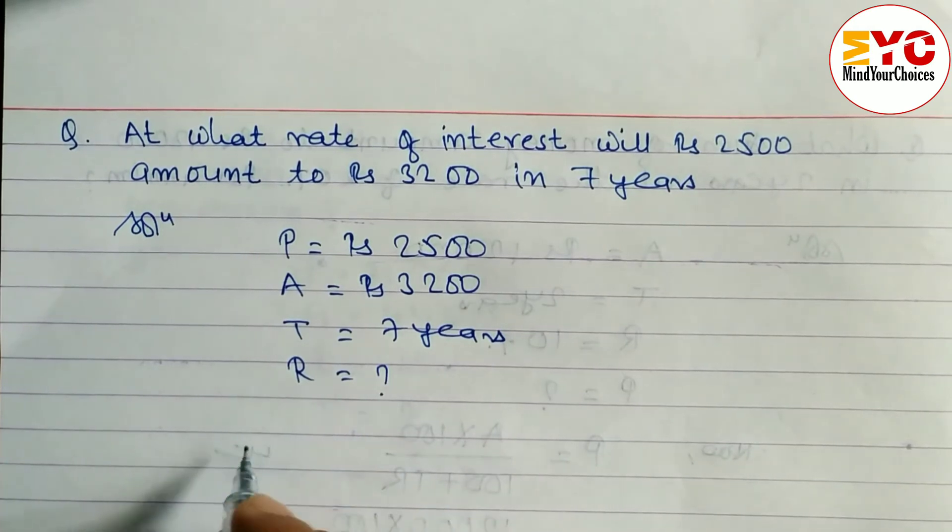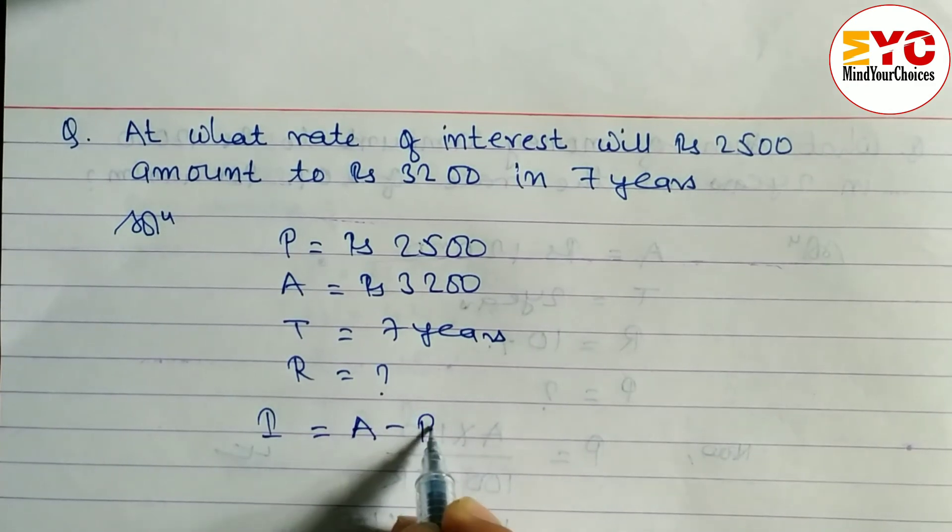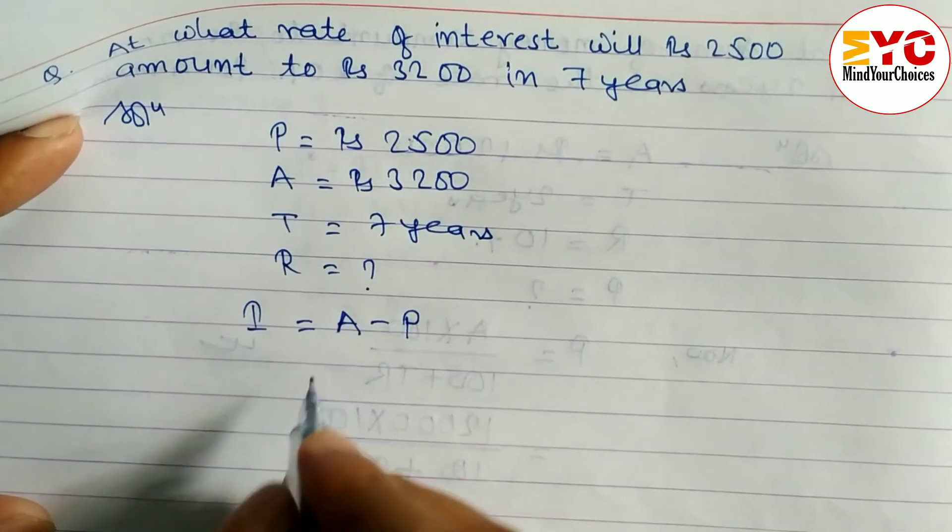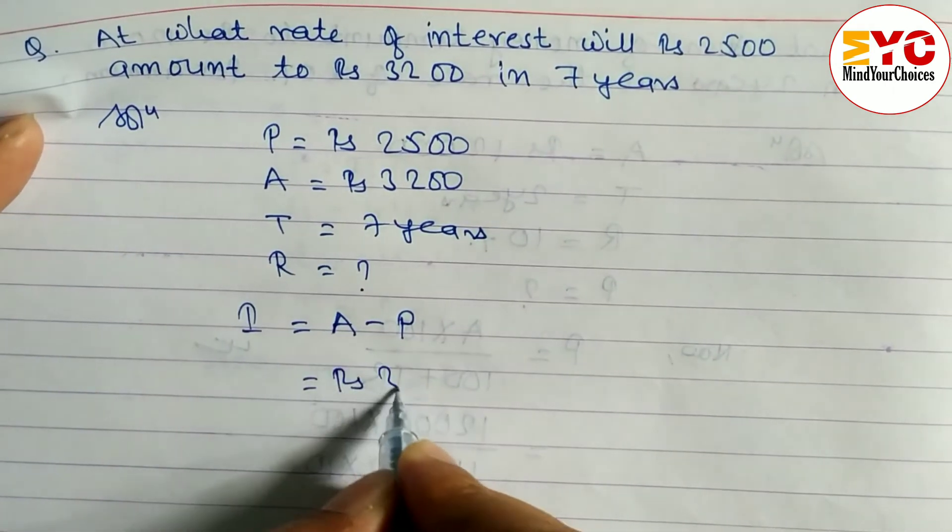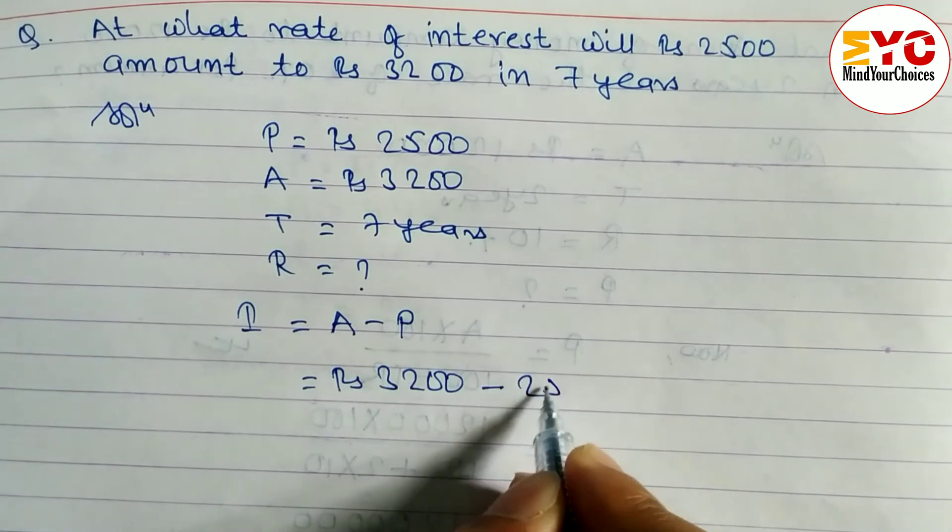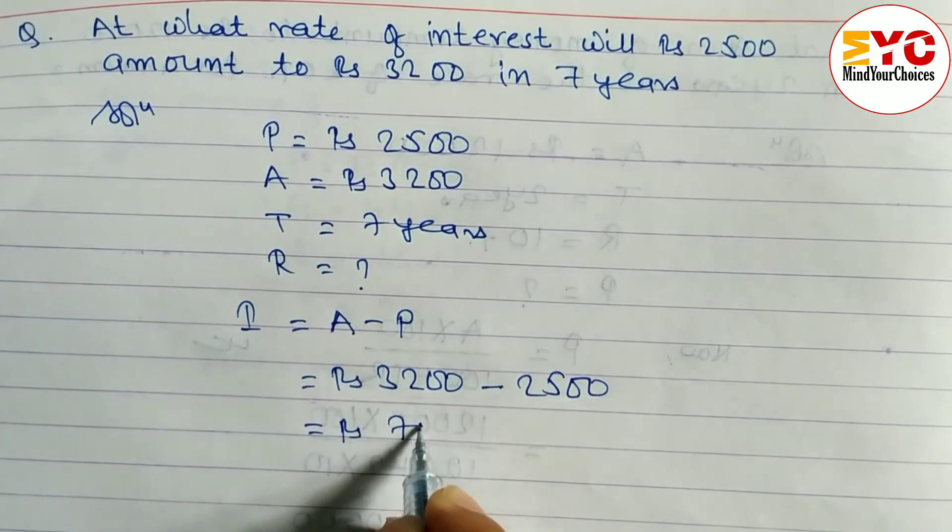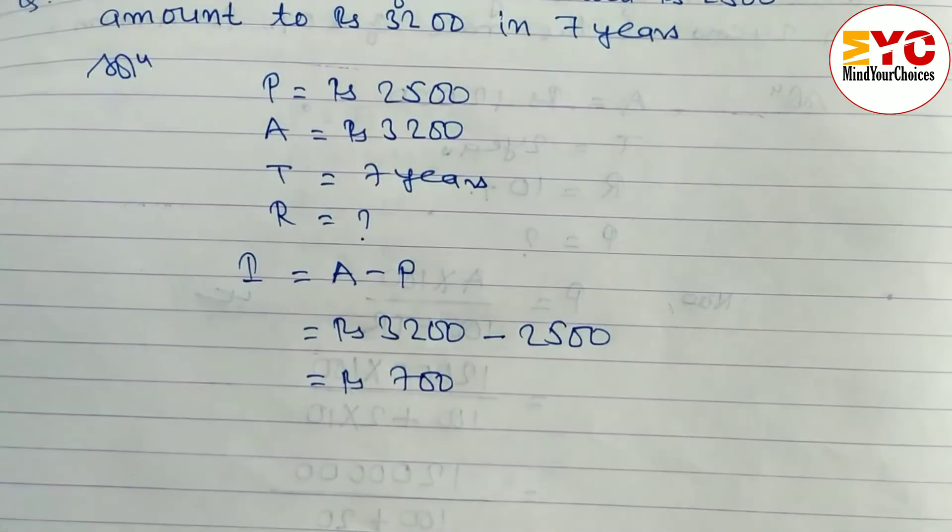I in 200 by P into T, but I is not here, so let's find out I. Formula is A minus P. From amount, when you subtract the principle, we get interest. Amount is given here 3200 minus principle is equal to 2500. When you subtract, we get here 700 as interest.